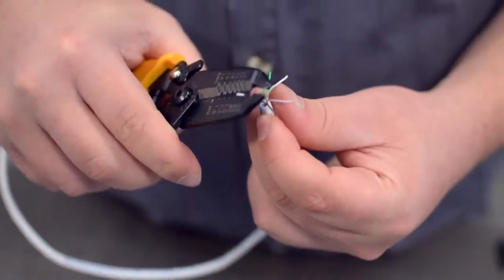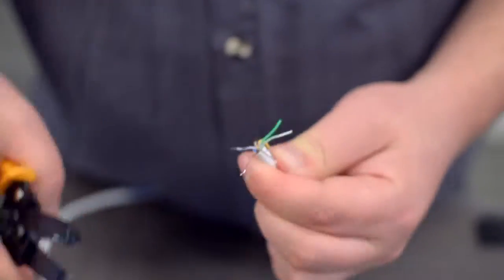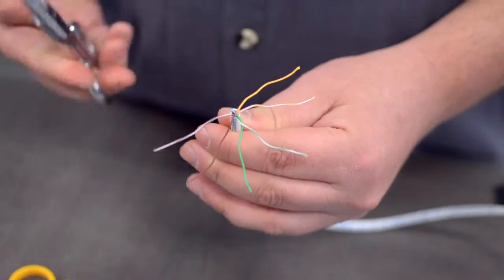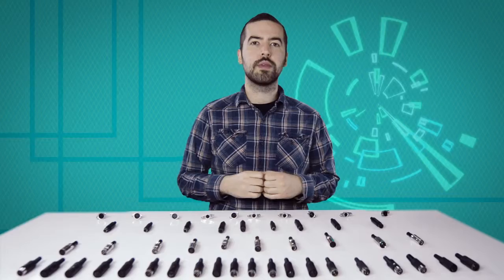You will also need to strip the individual conductors. Trim off any additional conductors if needed. Now comes the hard part: soldering.